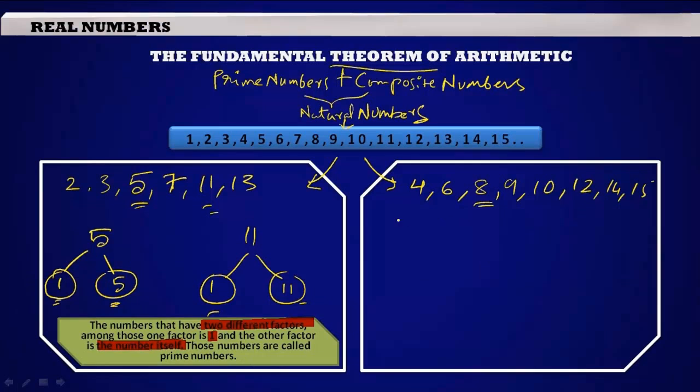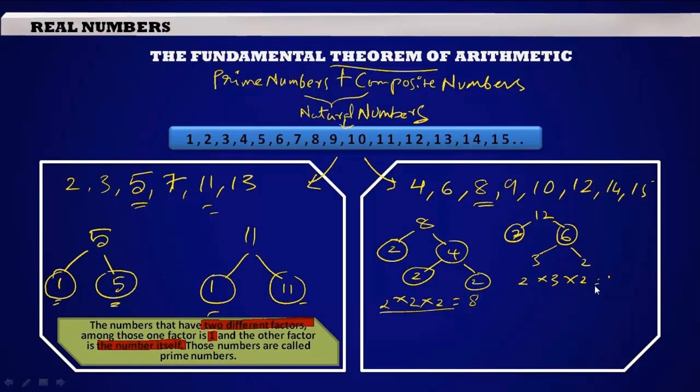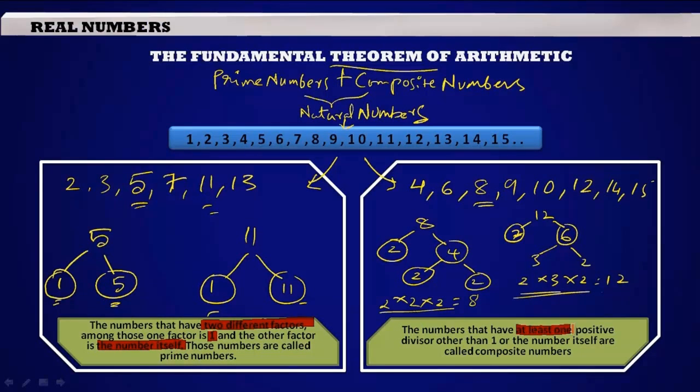Now come to the second set and pick a number, say for example take 8. Let us find its factors: 2 fours are 8, 2 twos are 4, so 2 × 2 × 2 = 8. Let us take one more number, take 12: 2 sixes are 12, find the factors for 6, 3 × 2, so 2 × 3 × 2 = 12. So what do we observe from this set? The numbers that have at least one positive divisor other than 1 or the number itself are called composite numbers. The difference between prime numbers and composite numbers is: prime numbers have 1 and the number itself as their factors, whereas composite numbers have at least one positive integer as a divisor other than 1 and the number itself.